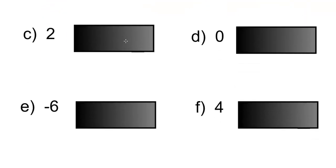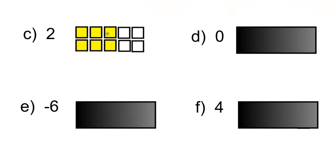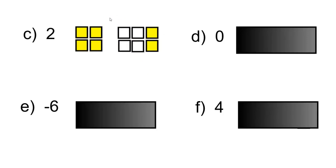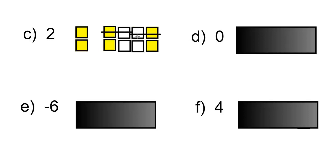C. Positive 2. This will be represented by 6 positive tiles and 4 negative tiles. Cancel out the zero pairs, and you're left with positive 2.